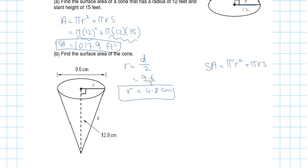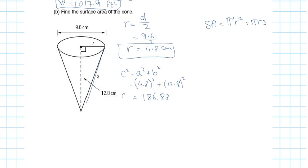I need to find the slanted height s using the Pythagorean theorem, because I know the height and the radius is 4.8. C squared equals a squared plus b squared, so that's 4.8 squared plus 12.8 squared. Taking the square root gives 13.7 centimeters. Remember this is still a length, not an area yet, so the unit is just centimeters. That 13.7 is your slanted height s.